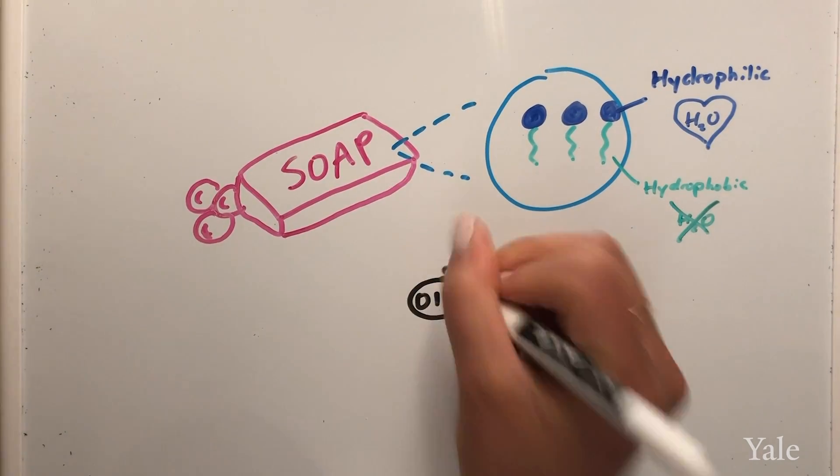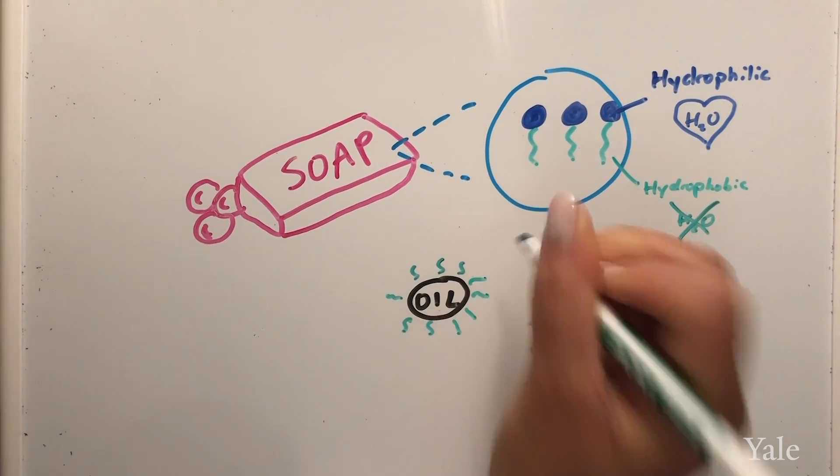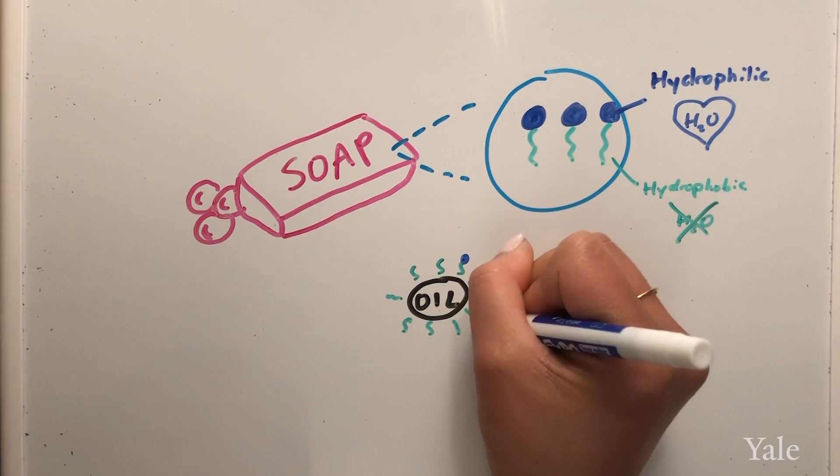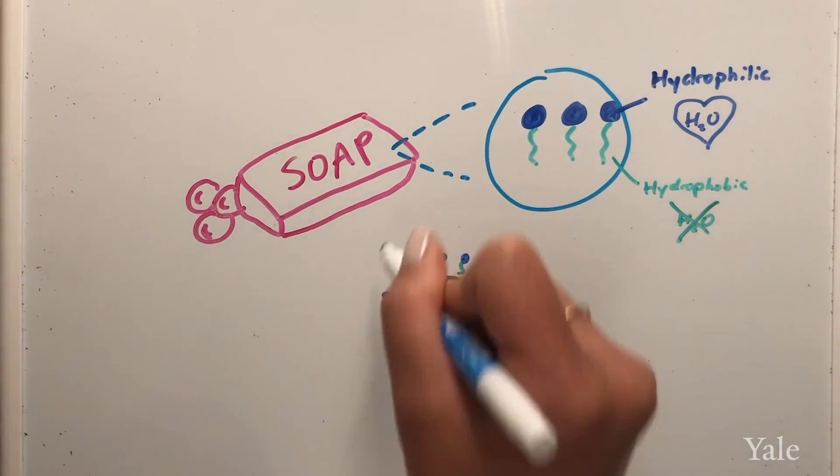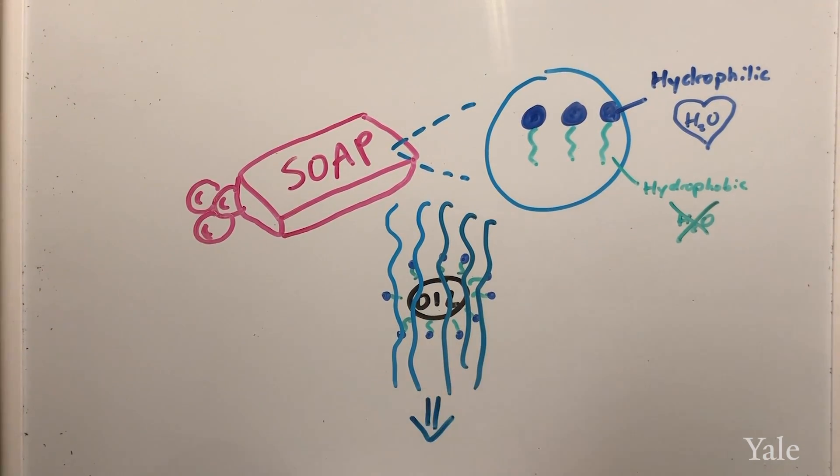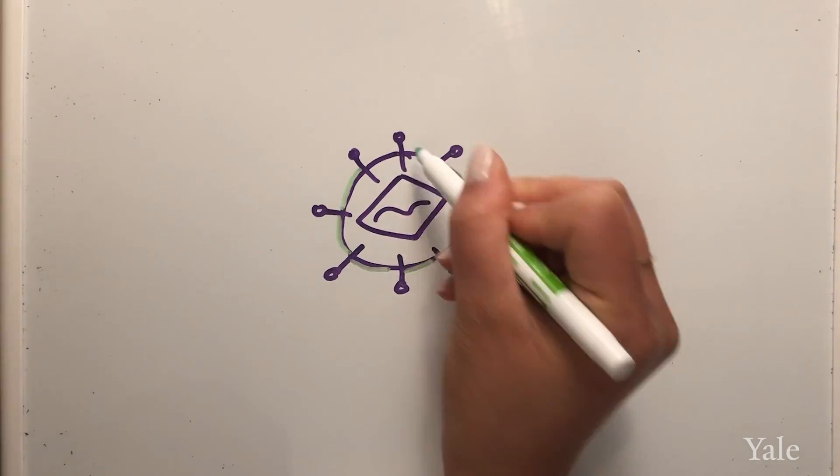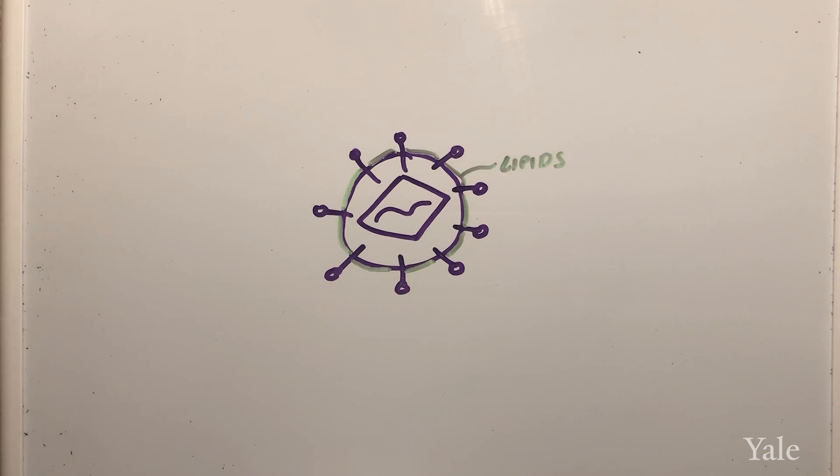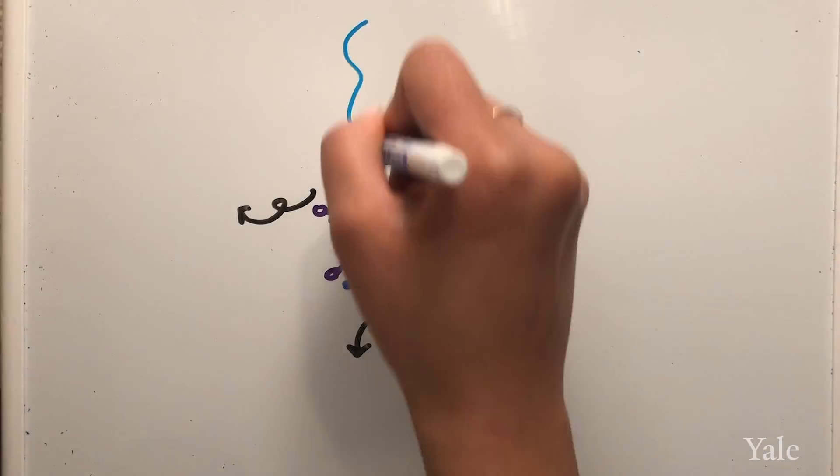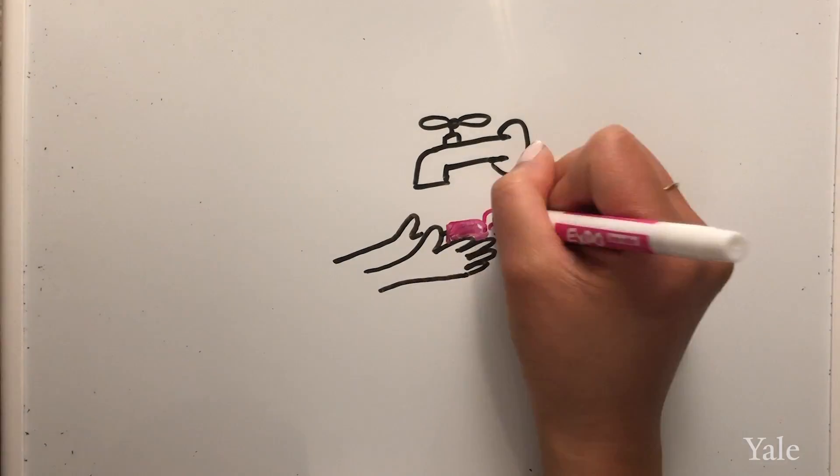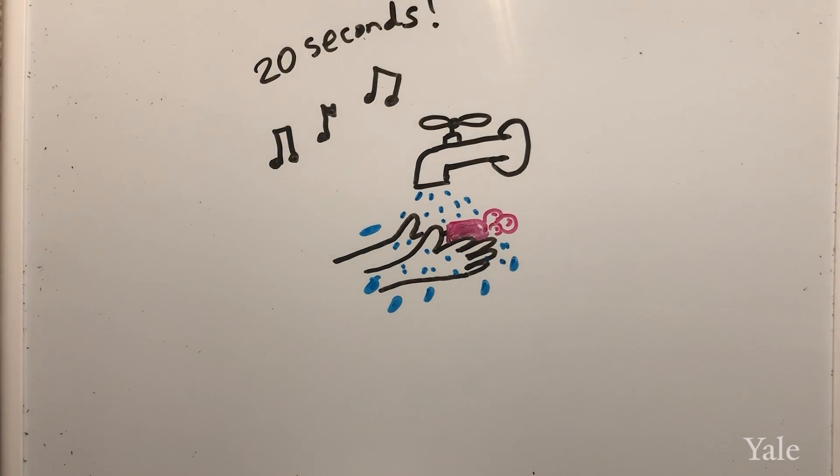When you mix soap and water the hydrophobic parts are attracted to the oil particle you're trying to wash off. They stick to the oil particle and when you rinse with water the hydrophilic parts follow the water taking along with it the oily substance. Remember that viruses have an outer envelope that consists of lipids which act like oils. Soap breaks apart the virus and gets it off your hands but it takes 20 seconds for this to completely work.